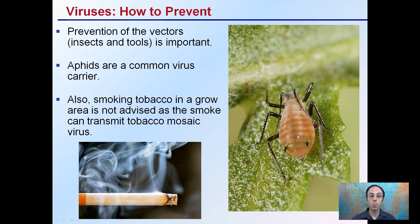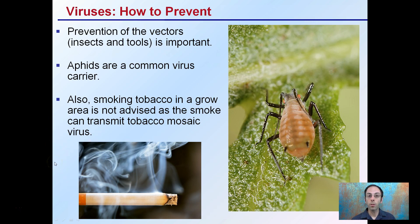How to prevent it? Prevention of the vectors — insects and tools — is important. Aphids are a very common virus vector or carrier. They can cause spreading through an entire grow facility very quickly. Also, smoking tobacco in a grow area is not advised, as the smoke can transmit tobacco mosaic virus. A lot of times you'll see no smoking signs in tobacco fields, which may seem counterintuitive, but it's because of the fear of tobacco mosaic, which can transmit through the smoke of a cigarette.